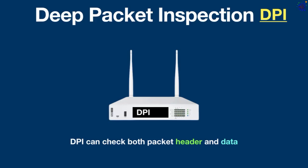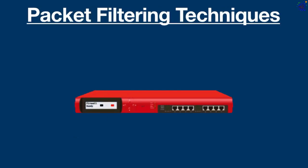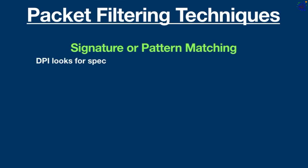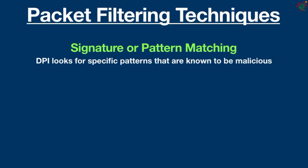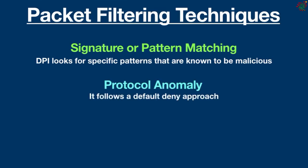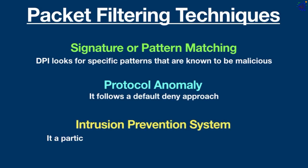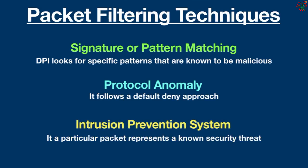Deep packet inspection uses three main techniques for packet filtering. First, signature or pattern matching: DPI looks for specific patterns known to be malicious and blocks traffic if such a pattern is found. Second, protocol anomaly: it follows a default deny approach where the firewall determines which content should be allowed based on protocol definitions. Third, intrusion prevention system (IPS): if a particular packet represents a known security threat, IPS will proactively deny network traffic based on a defined rule set.